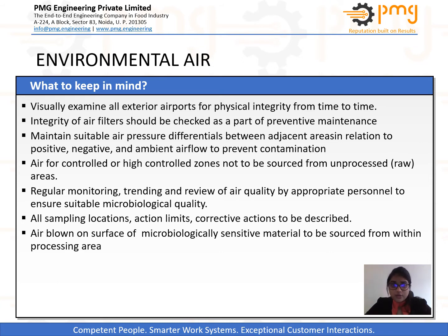Manufacturing or production areas need to be maintained at the utmost hygiene as the product comes in direct contact with the environment. In manufacturing areas, certain preventive actions are required to be implemented so that desired quality of the product can be achieved. These measures include: first, regular monitoring, trending and review of air quality by appropriate personnel for ensuring microbiological quality of the air. Second, maintenance of suitable air pressure differentials between adjacent areas — positive, negative and ambient airflow — to prevent contamination. High hygiene areas should always be maintained at positive pressure so that whenever any door or window is opened, air automatically flows from high hygiene areas to low hygiene areas.